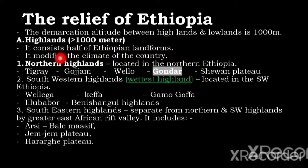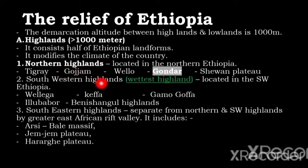The highlands are classified into three groups: Northern Highlands, South-Western Highlands, and South-Eastern Highlands.